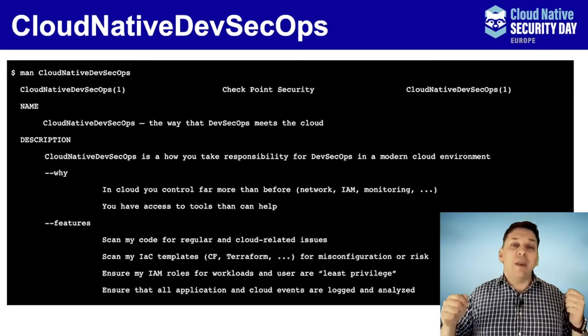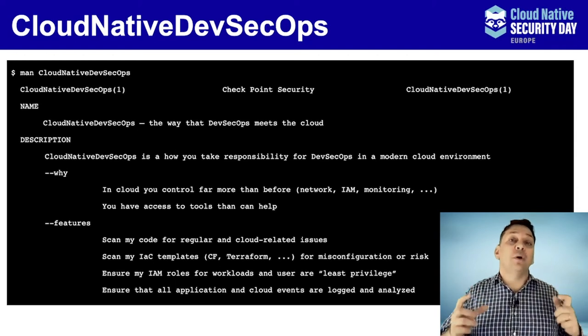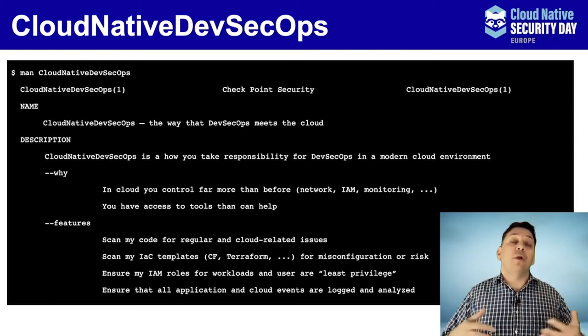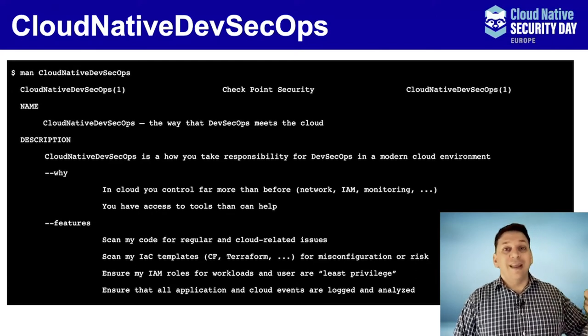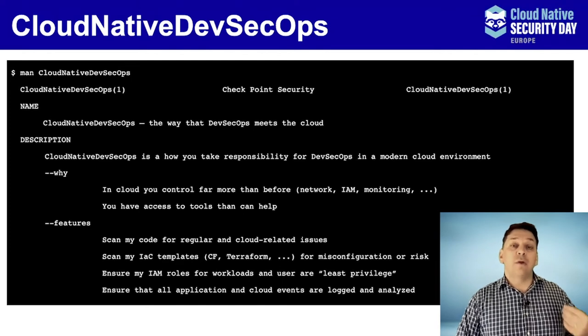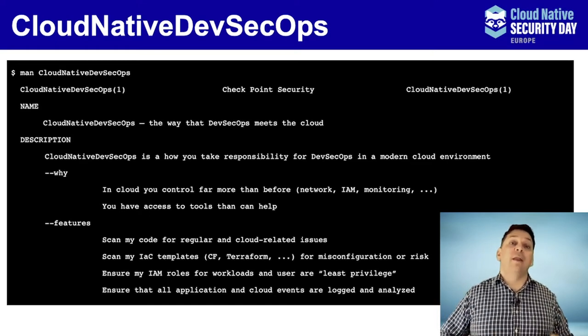If you plug those two things together — it's my responsibility and I have the opportunity to do it right — that gives you a path forward. There are increasingly a large number of tools out there to help you do that: tools to scan code, tools to scan infrastructure as code like Terraform scripts and CloudFormation, tools to scan container images, and tools to help with monitoring and logging. Those things are at your disposal. But step one is to identify that it is your problem to solve. You need to make sure you're scanning deployment scripts — Terraform, CloudFormation — as cloud constructs, to ensure your templates deploy things with the least amount of risk.